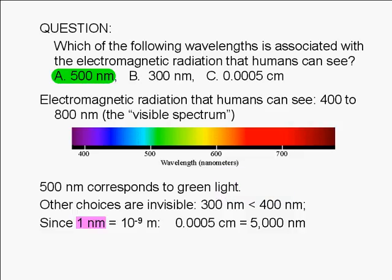Since a nanometer is 10 to the negative 9 meters, 0.0005 centimeters is equivalent to 5,000 nanometers.